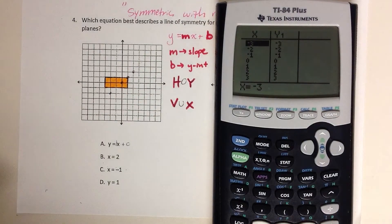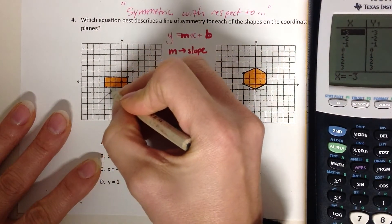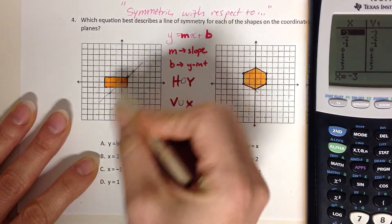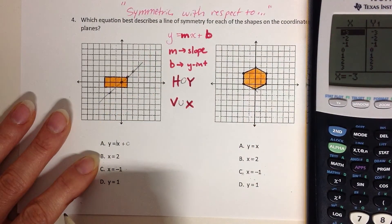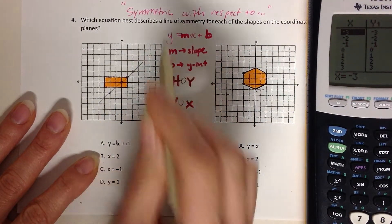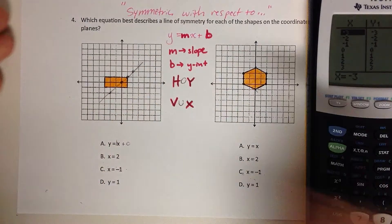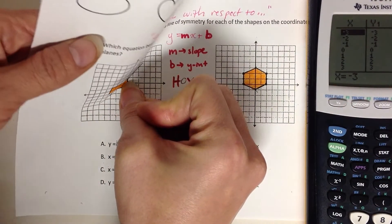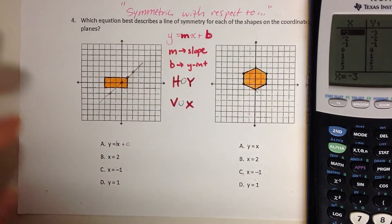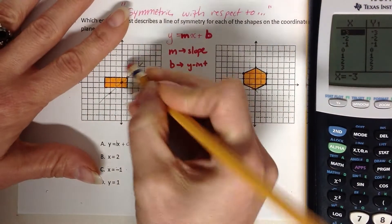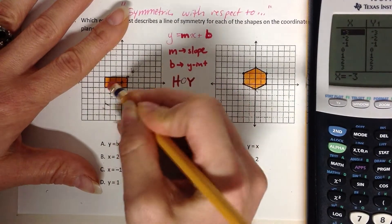So is that a line of symmetry? Is it symmetric with respect to this line? No — if I were to fold, the shape is not going to land down on itself. So I'm working backwards and I've just eliminated choice A.